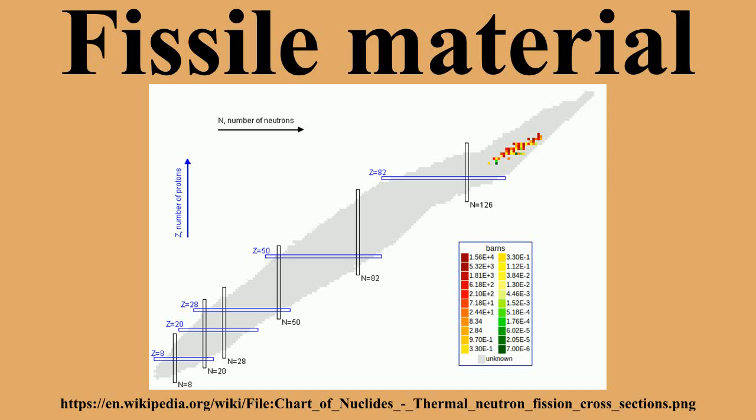More generally, nuclides with an even number of protons and an even number of neutrons, and located near a well-known curve in nuclear physics of atomic number versus atomic mass number, are more stable than others. Hence, they are less likely to undergo fission.